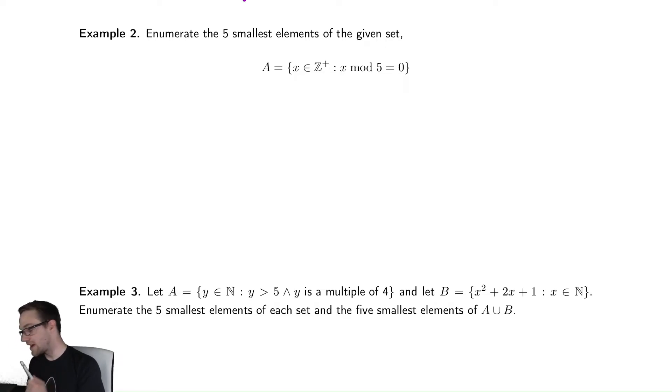List the five smallest elements in the positive integers. This is a new notation that we'll see a couple of times in this class. This is the integers greater than zero.